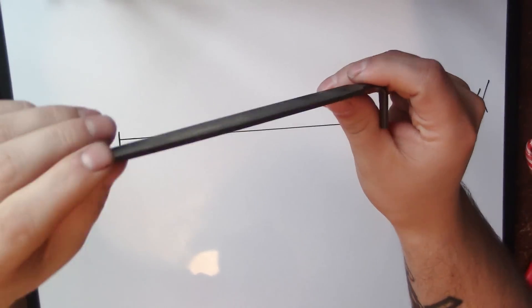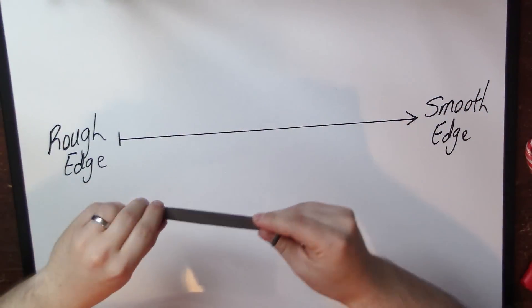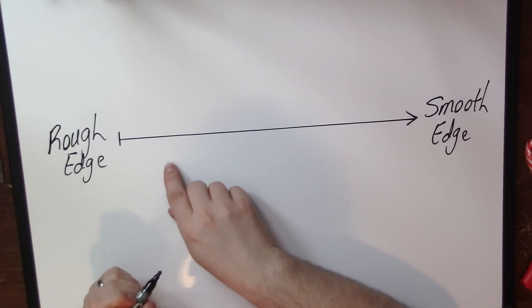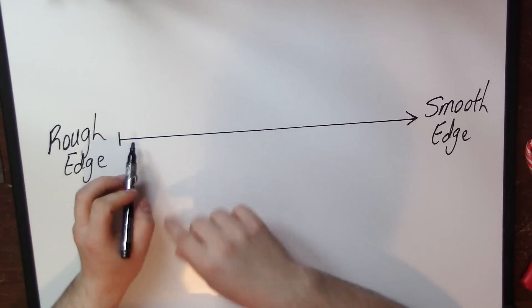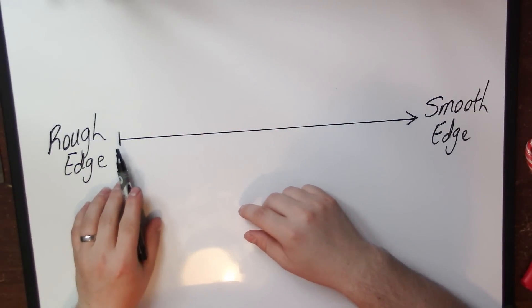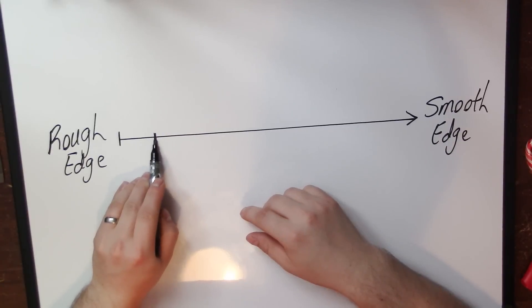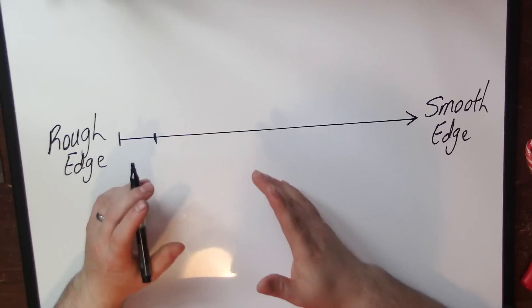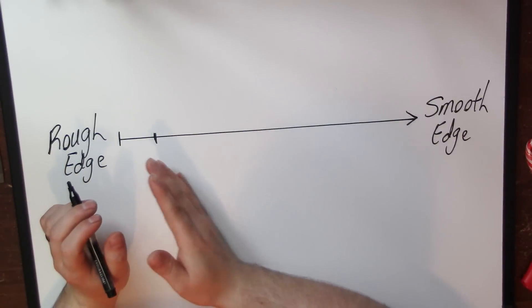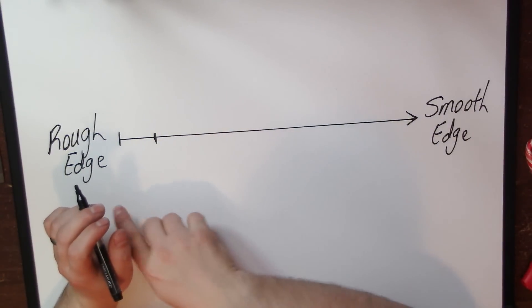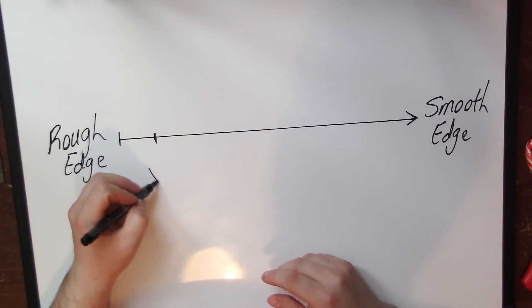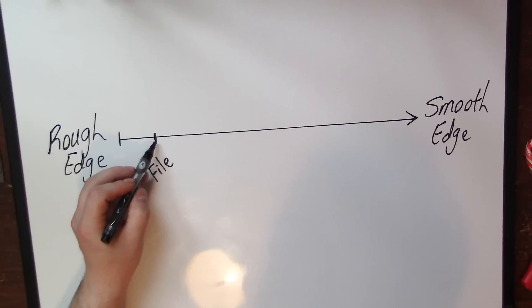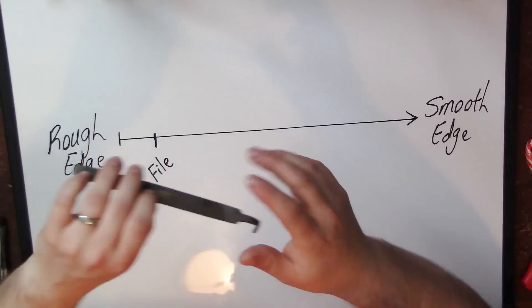A file, as we mentioned a few minutes ago, works great. Now a file is still pretty far down on this spectrum. A file might be somewhere like here but it does have its place, because a higher grit tool is going to take a long time to move from rough to smooth.